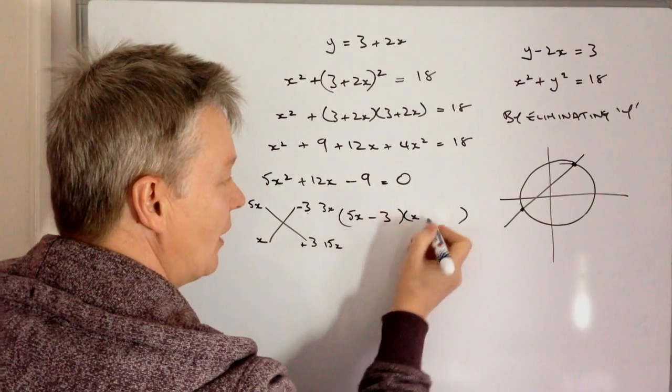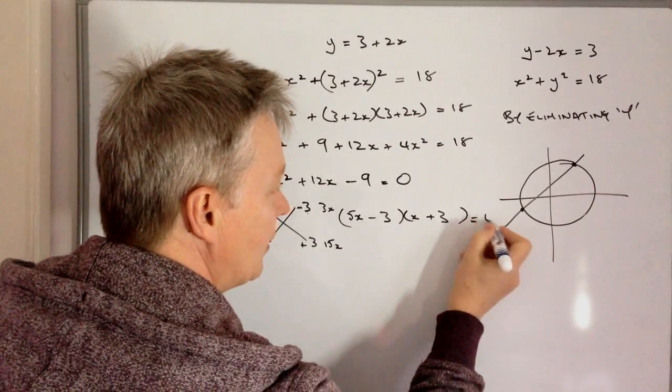Well, that's great because 15x minus 3x is going to be 12x, so that's becoming a minus and that'll stay as a plus. So 5x minus 3, times x plus 3, and that's all equal to zero.